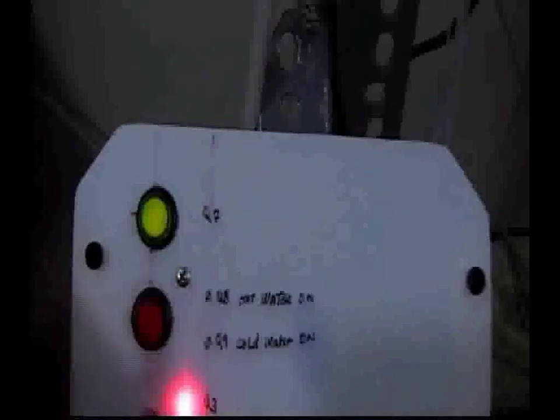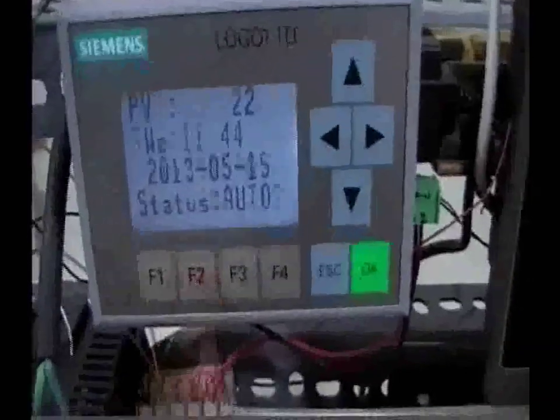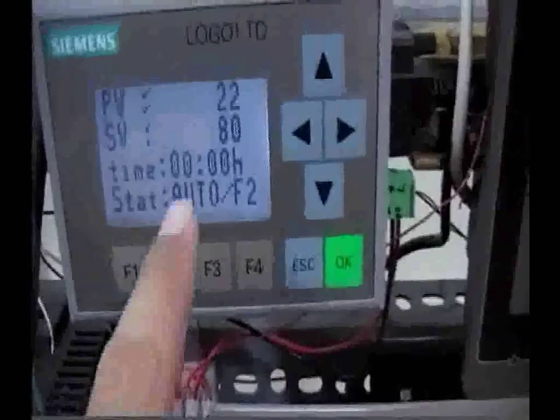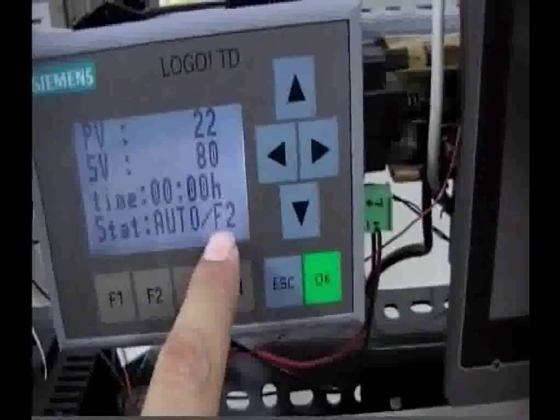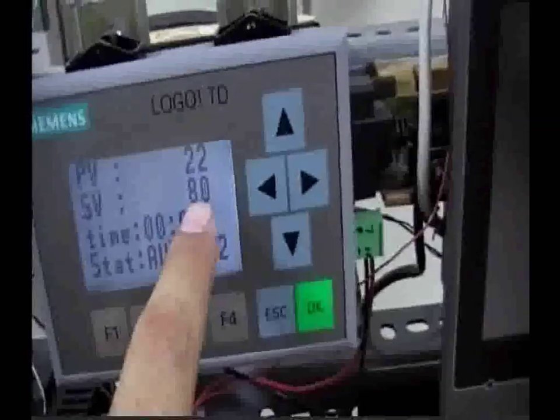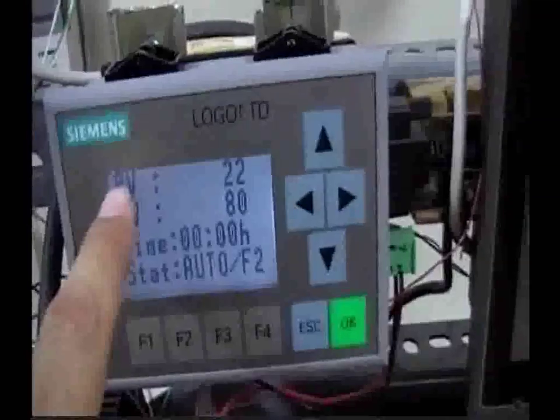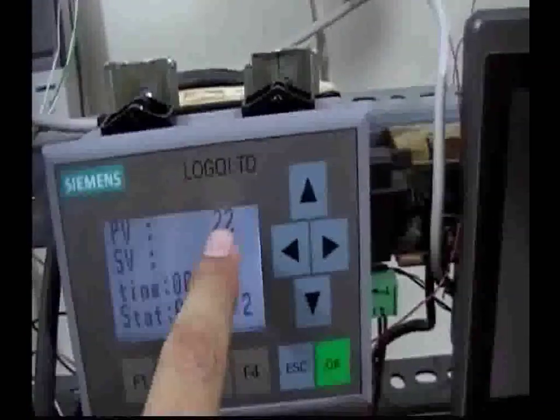Then to restart the system, start the system again, and this time push F2 function. This way you're going to see that the system is in auto F2 mode, and the curve says that it has to be 80 degrees, but the temperature on the sensor is reported as 22 degrees centigrade.